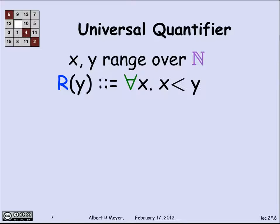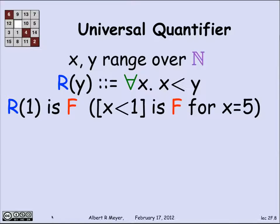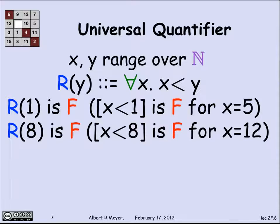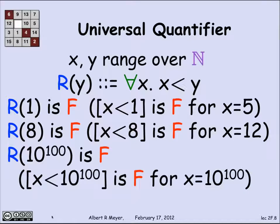Now let's look at the same example with a universal quantifier. R of y means that for every x, x is less than y. R(1) is false because 5 is a counterexample — 5 is not less than 1. R(8) is false because 12 is not less than 8. R of a googol (10 to the 100th) is false, because if you let x be a googol, it's not less than a googol.